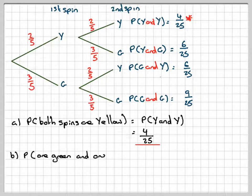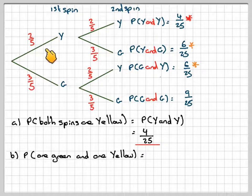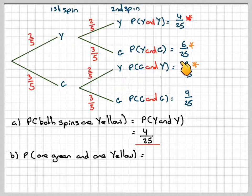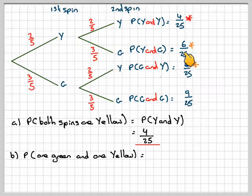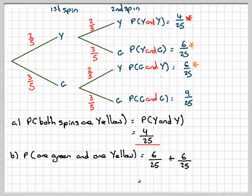The probability of one green and one yellow. That can happen as either a yellow and a green, or a green and a yellow. These two events are mutually exclusive, so we use the addition law for mutually exclusive events. That's going to be six out of 25 plus six out of 25, which is equal to 12 out of 25.